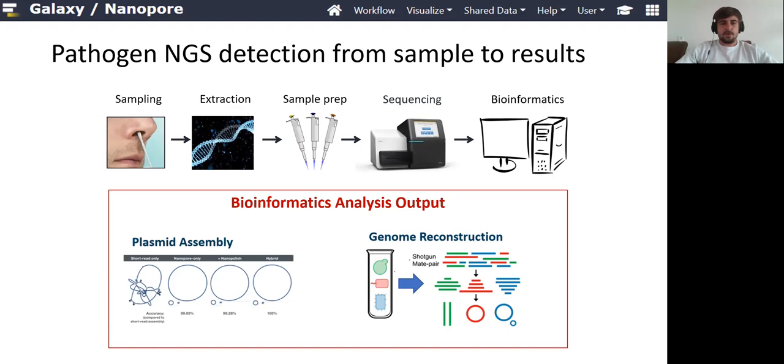Before you can go to the bioinformatics, there are multiple steps that you have to take. This includes sampling, extraction, sample preparation, and then the actual sequencing. You always end with the bioinformatics pipeline, and this is what you can run in NanoGalaxy.